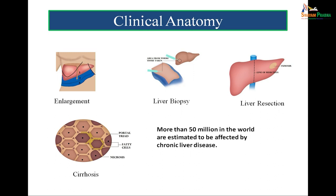Good day all of you. I am Dr. Gaurav Agnihotri and today I am going to give a talk on the gross anatomy of the liver. More than 50 million in the world are estimated to be affected by chronic liver disease. The liver may become enlarged in pathological conditions or it may get shrunken in size as is evident in cirrhosis of the liver. End stage liver disease may require removal of the liver and sometimes the liver also needs to be transplanted. For diagnostic purposes, the liver biopsy is done.